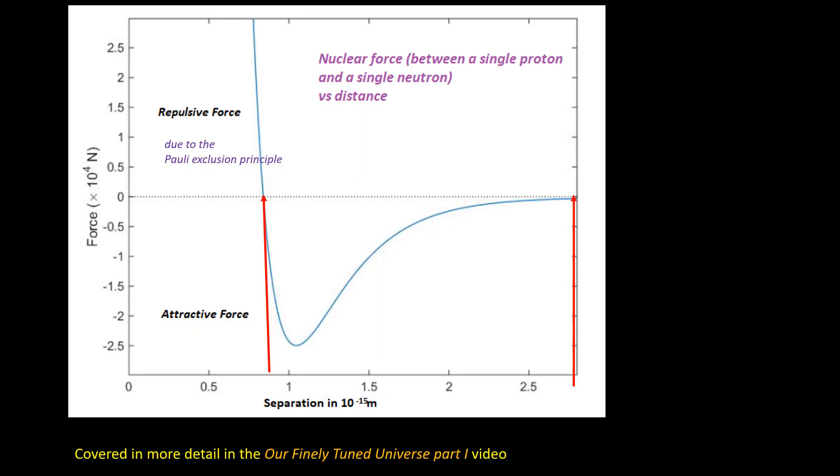Atomic nuclei are held together by the residual strong interaction, more commonly known as the nuclear force. This binds together nucleons, by which we mean protons and neutrons, and is very short range. It doesn't follow an inverse square law, falls rapidly with distance, effectively dropping to zero at only 3 times 10 to the minus 15 meters. It's actually repulsive at very short distances.